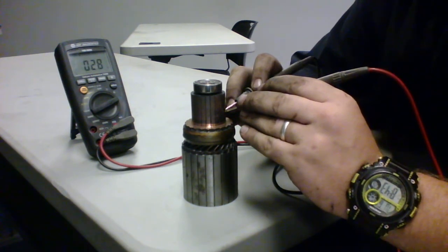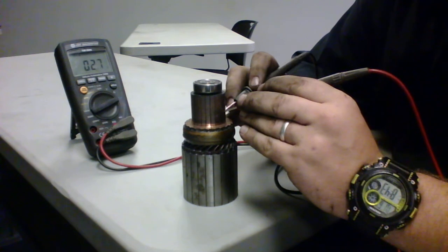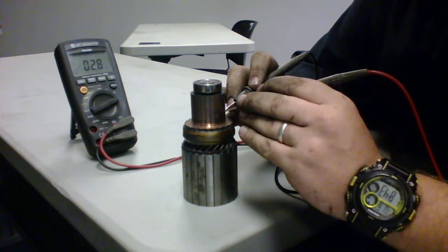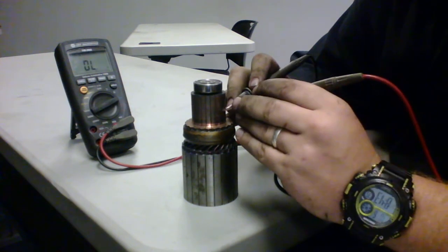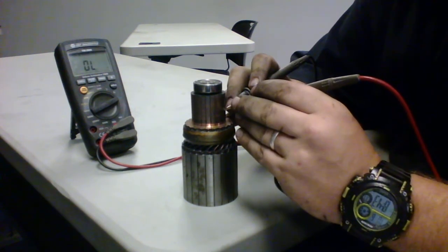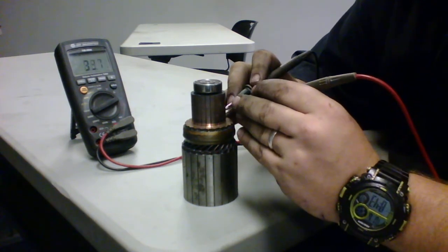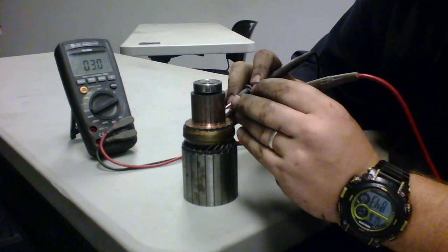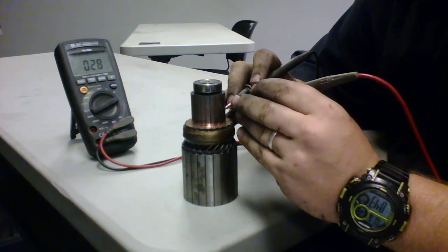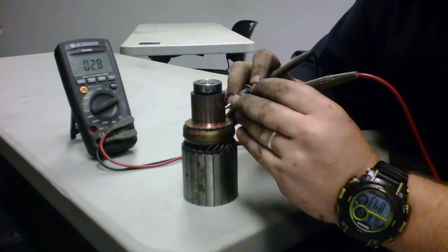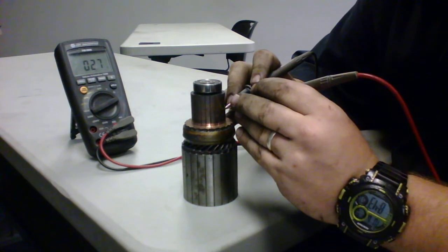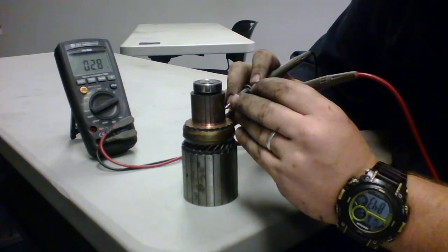So here we found a fault in the armature whereas we're running 2.8 instead of our regular 1.3 to 1.2. There it is, as you can see we've got a ground issue within our armature.